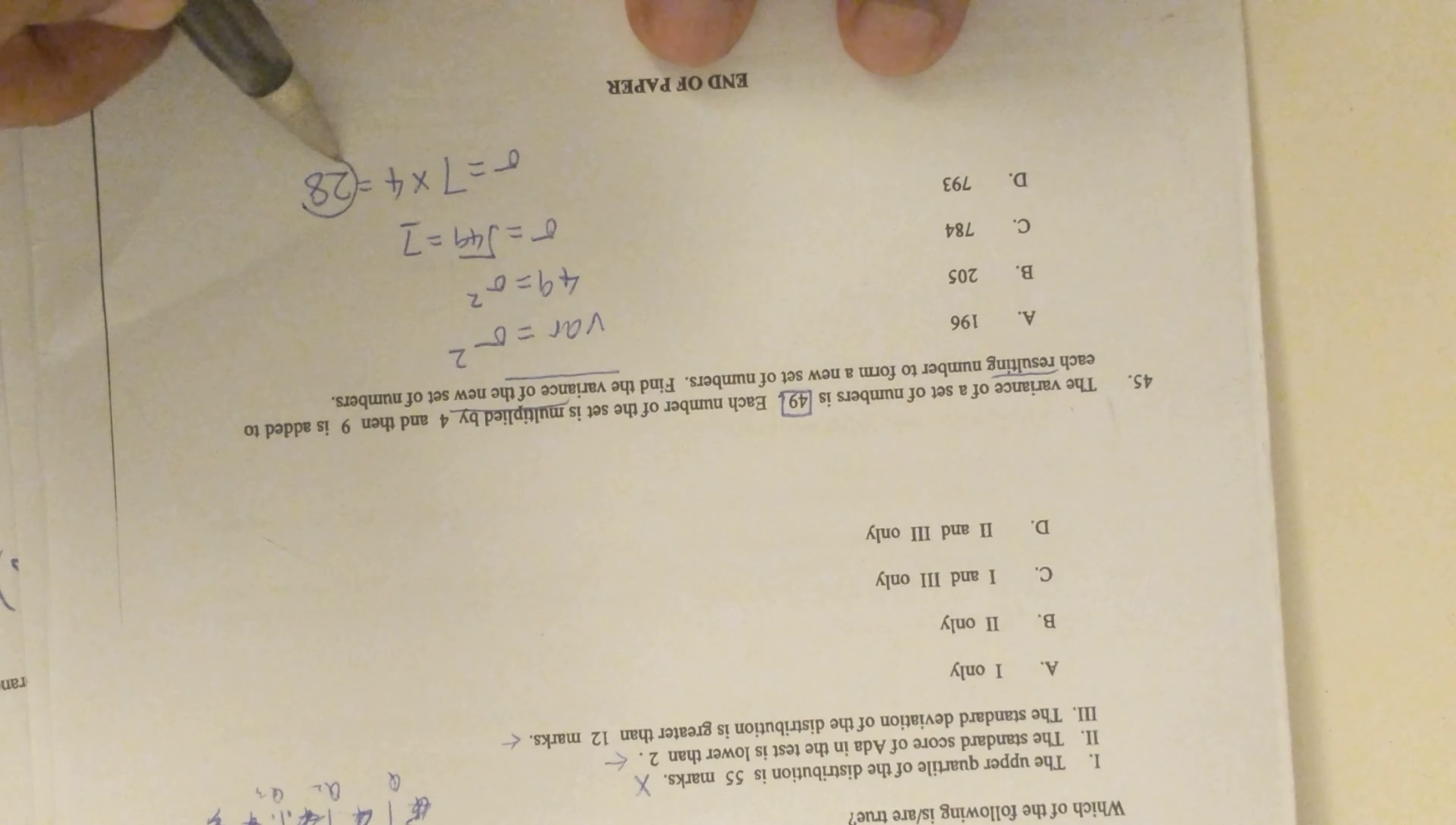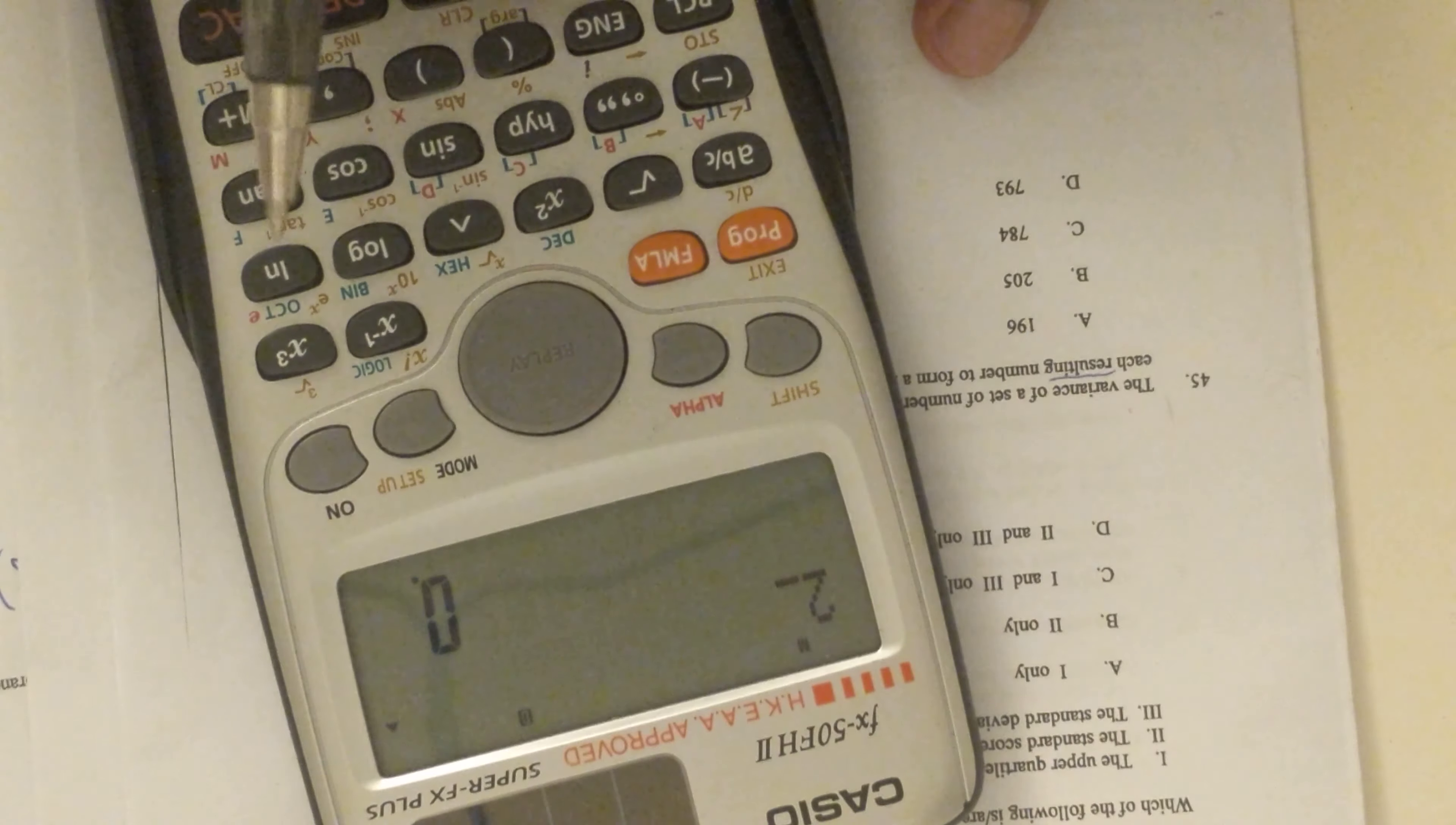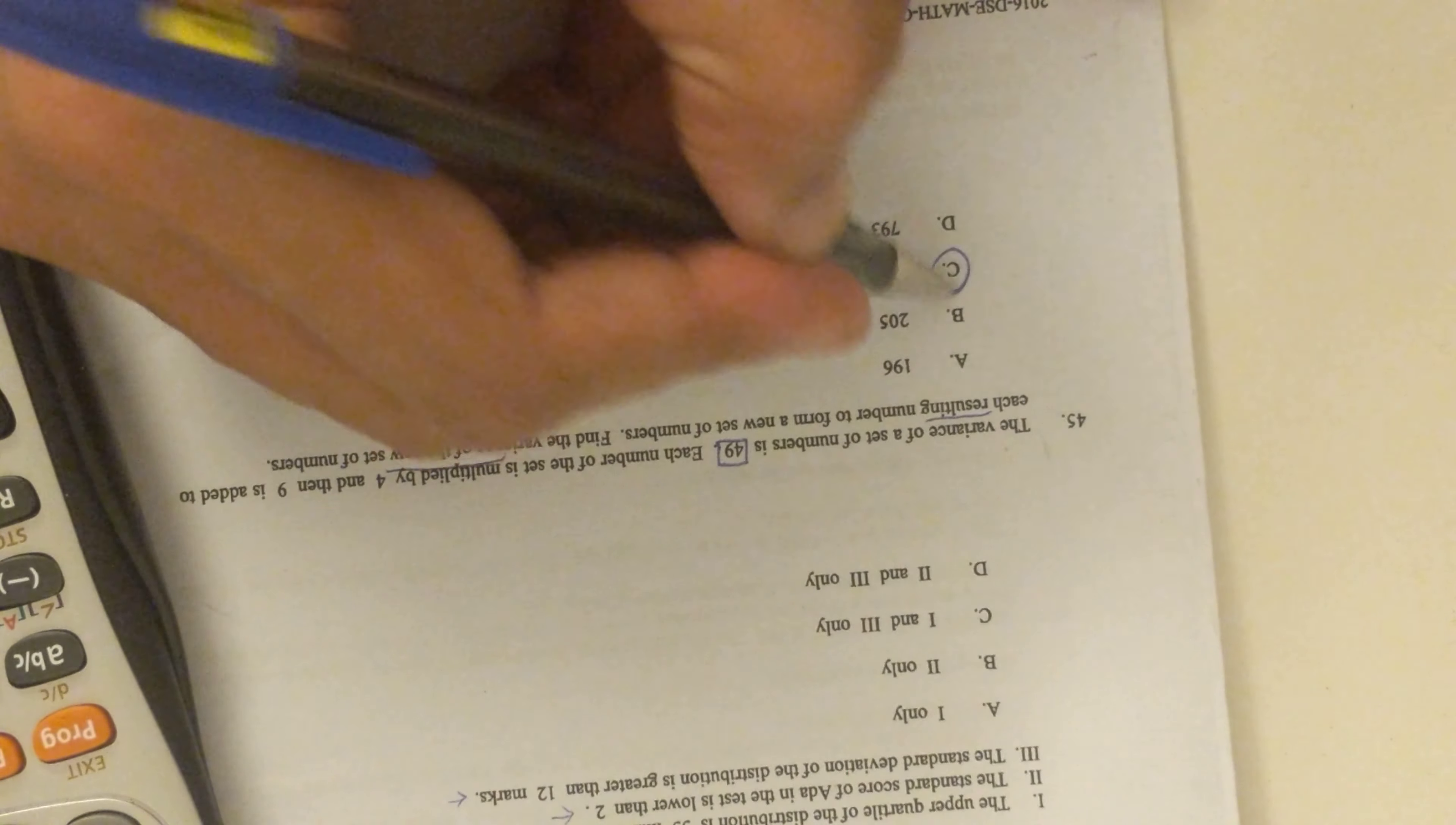Since they're asking for the new variance, because the new SD is 28, I told you variance is square of SD, so we need to simply get the square of 28 - that's seven hundred and eighty-four.